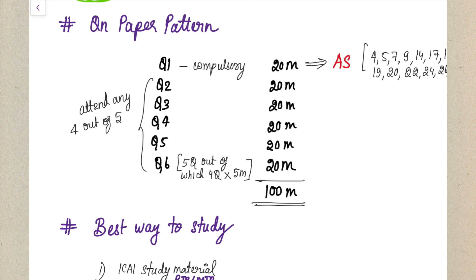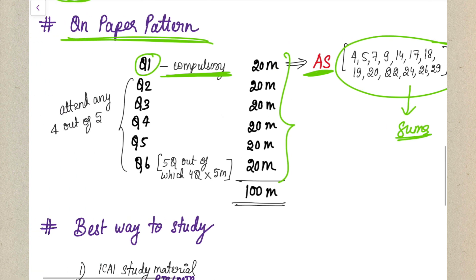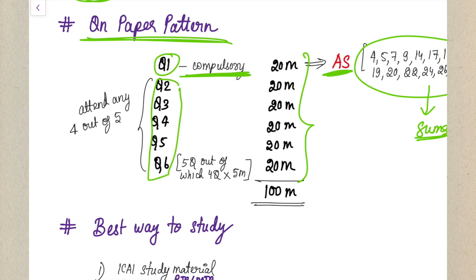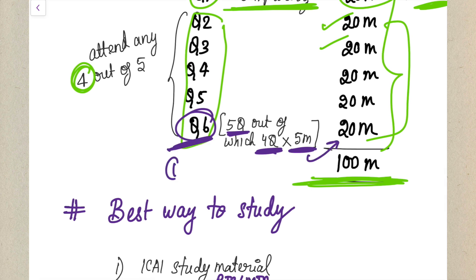Now let's discuss the question paper pattern. Question Number 1 is your compulsory question worth 20 marks, asked from Accounting Standards - prepare all the Accounting Standards and related sums. After that, you are given five questions out of which only four you have to attend, each for 20 marks. Question Number 6 consists of five sub-questions out of which only four you have to attempt, each for 5 marks, totaling 20 marks.